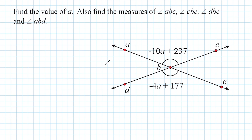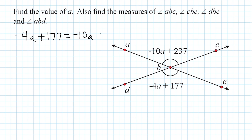Let's set these two expressions equal to each other, because once again we are dealing with vertical angles. So we start by writing: negative 4A plus 177 is equal to negative 10A plus 237.